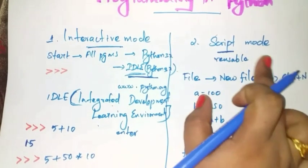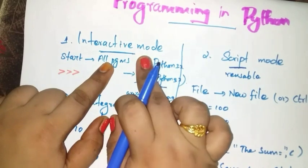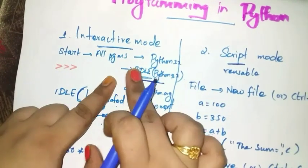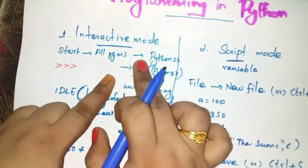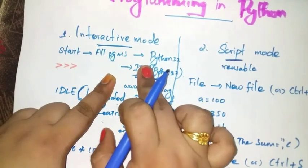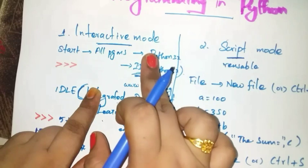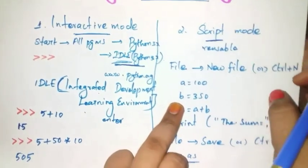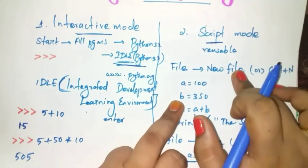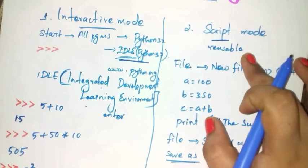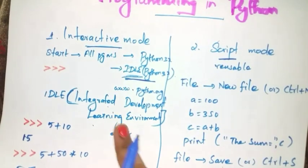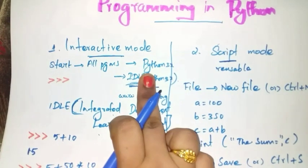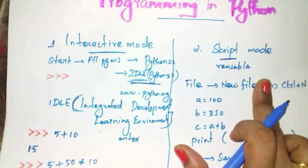What is the difference between interactive mode and script mode? Interactive mode is good for beginners, but script mode is used by both beginners and experts. In interactive mode, you are not saving your code, so if any mistakes are present, you have to retype again and again. In script mode, you save your file, so you can reuse the code and easily edit any mistakes. This is a very important exam question — study well. Thank you.